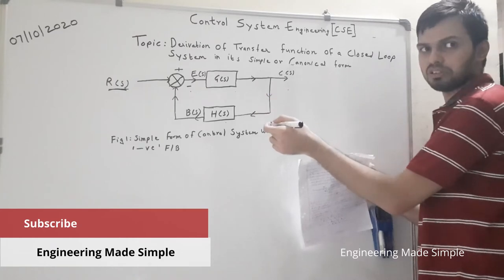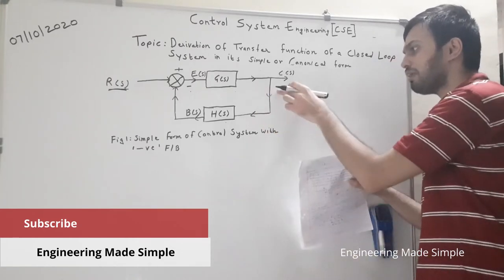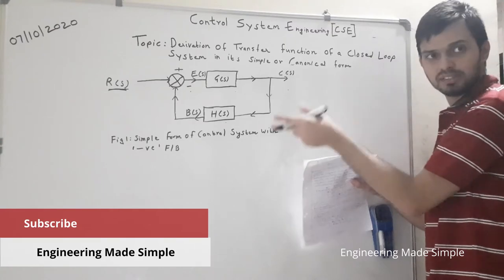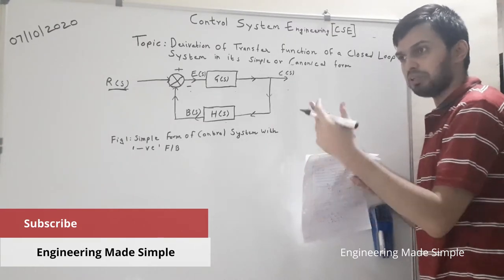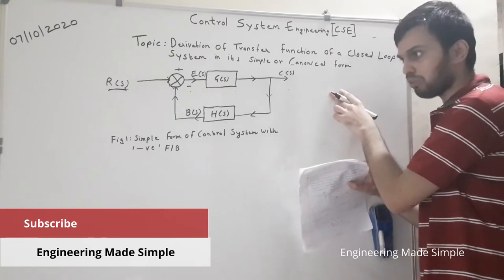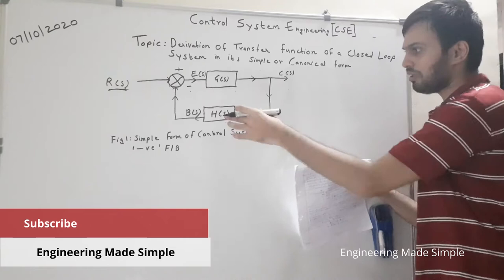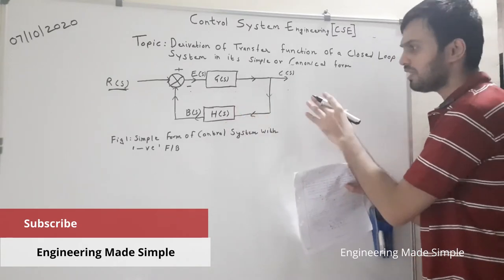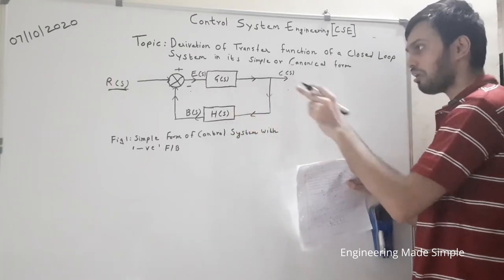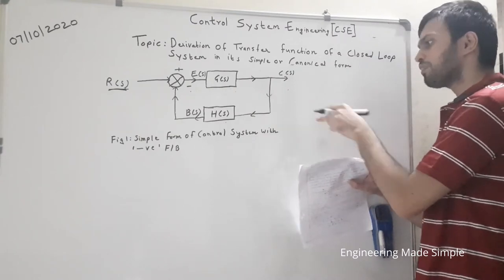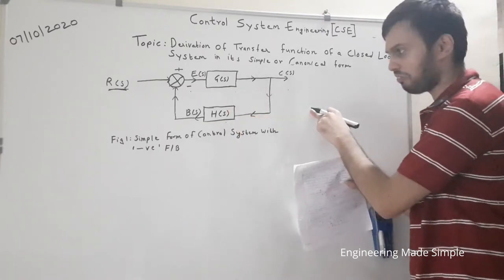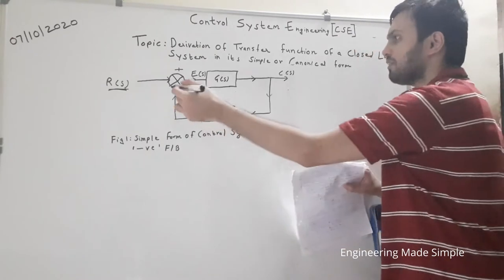As discussed in the previous class, whenever we have a closed loop system, we can find the overall transfer function using block diagram reduction rules. Before discussing block diagram reduction rules for more complicated systems, we will first understand how to derive the transfer function of a closed loop system in its simple or canonical form.